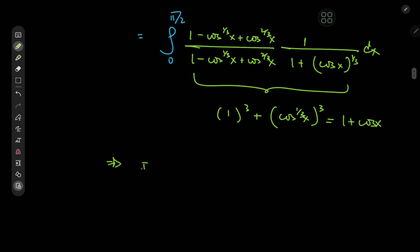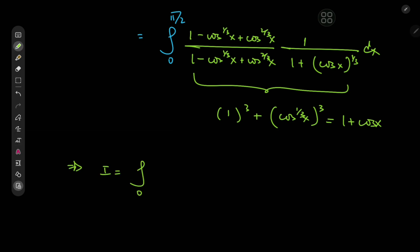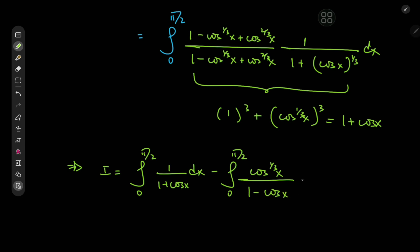This implies that the target integral I can be split up into three integrals using the linearity of the integration operator. So we have I equal to the integral from 0 to π/2 of 1/(1 + cos x) dx, minus the integral from 0 to π/2 of cos^(1/3) x divided by (1 + cos x) dx, plus the integral from 0 to π/2 of cos^(2/3) x divided by (1 + cos x) dx.